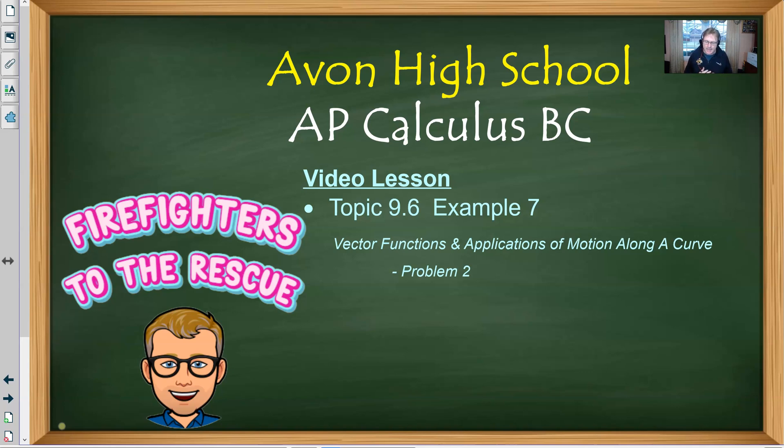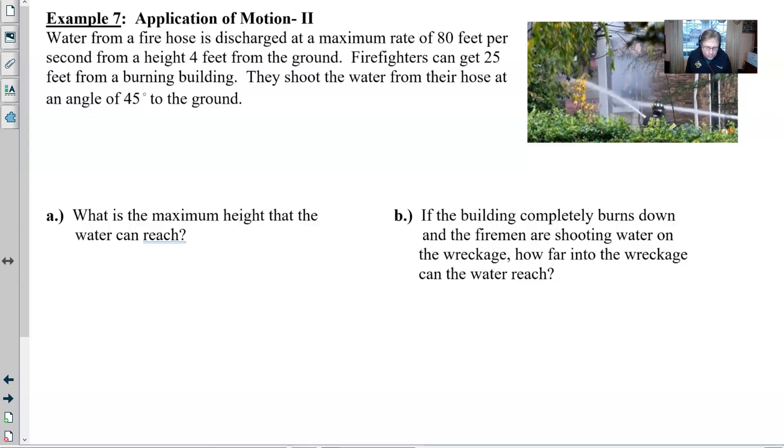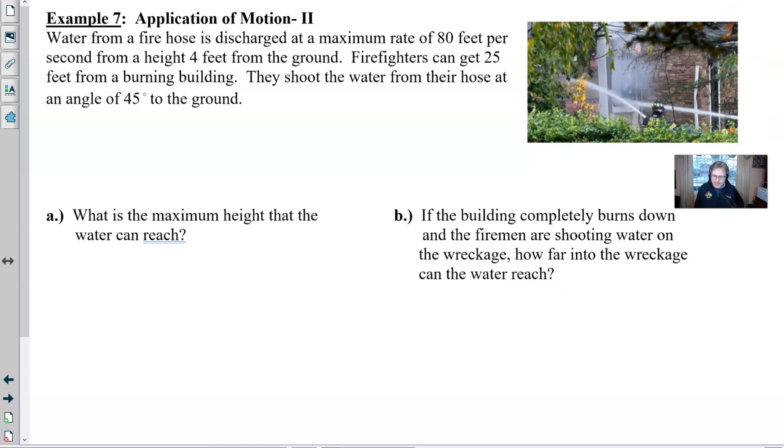It's time we're going to look at an application that deals with firefighters to the rescue, some of our first responders. We've got water from a fire hose that is being discharged at a maximum rate of 80 feet per second from a height 4 feet from the ground. Firefighters are able to get 25 feet from a burning building and they shoot the water from their hoses at an angle of 45 degrees to the ground.